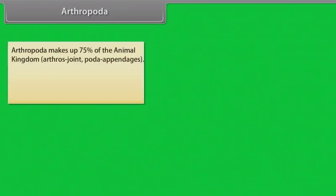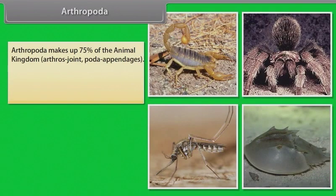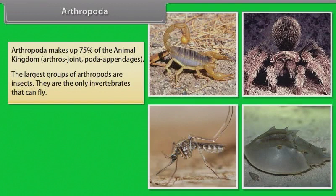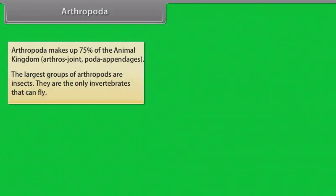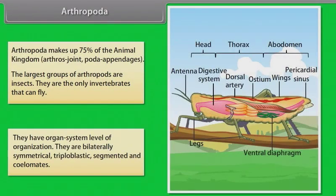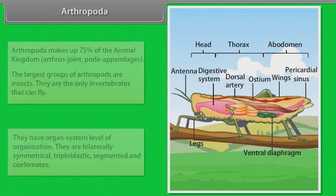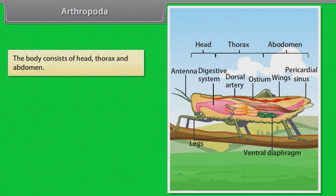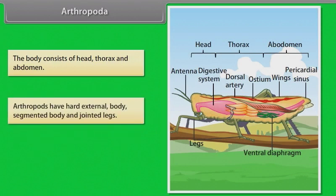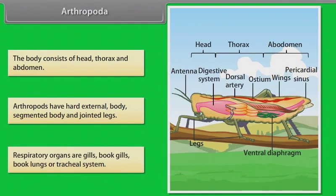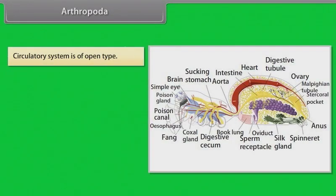Arthropoda makes up 75% of the animal kingdom. 'Arthros' means joint and 'poda' means appendages. The largest group of arthropods are insects — the only invertebrates that can fly. They have organ system level of organization. They are bilaterally symmetrical, triploblastic, segmented and coelomate. The body consists of head, thorax and abdomen. Arthropods have a hard exoskeleton, segmented body and jointed legs. Respiratory organs are gills, book gills, book lungs or tracheal system. The circulatory system is of open type.